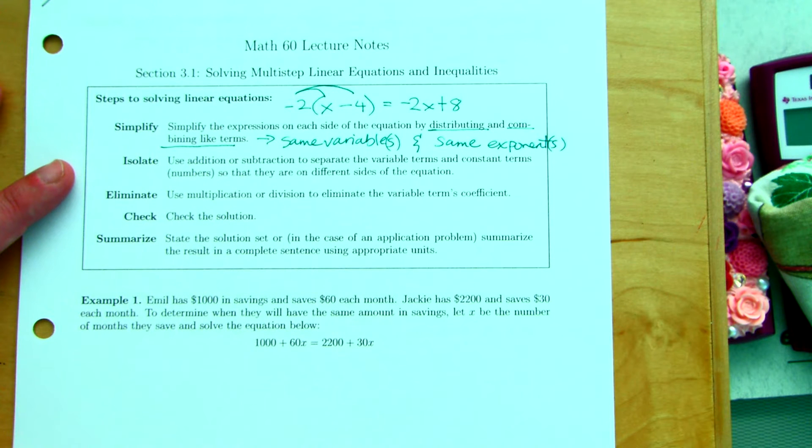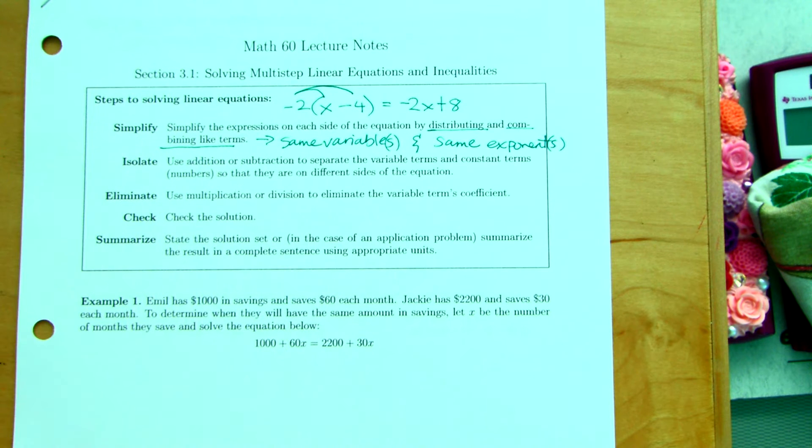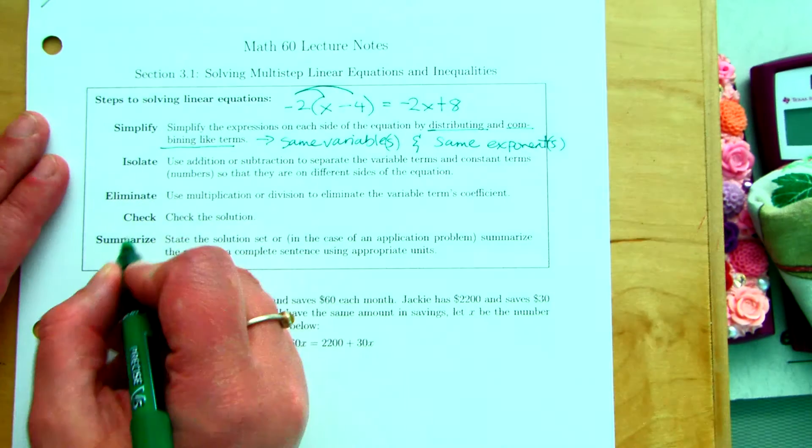Then we're going to isolate. We're going to do the same exact thing we did to solve one or two-step equations. We want to isolate using addition and subtraction to get all of the variables onto one side and all of the constants onto the other side. And then eliminate.